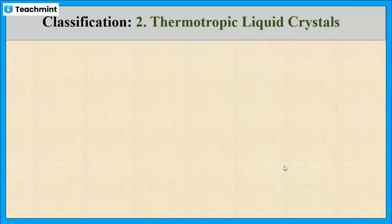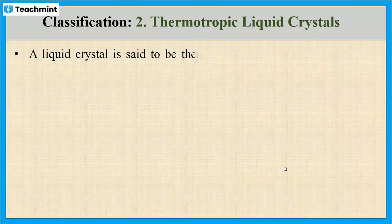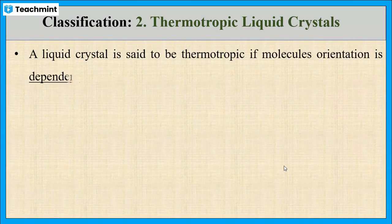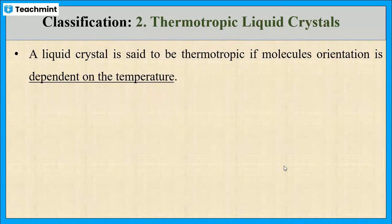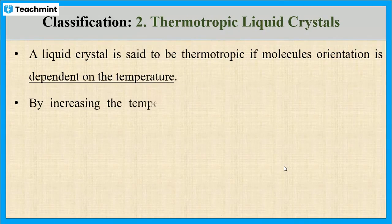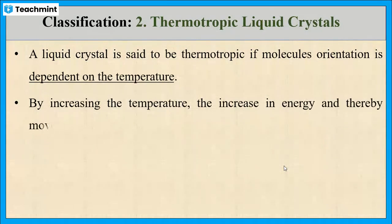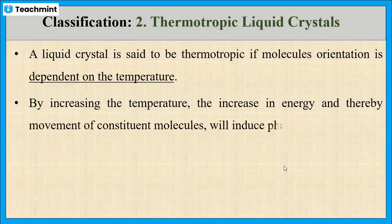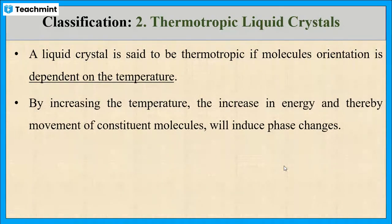The second category is thermotropic liquid crystals. The orientation of molecules in this type of liquid crystal depends on temperature. By increasing the temperature there will be a movement of constituent molecules, which induces a change in phase.